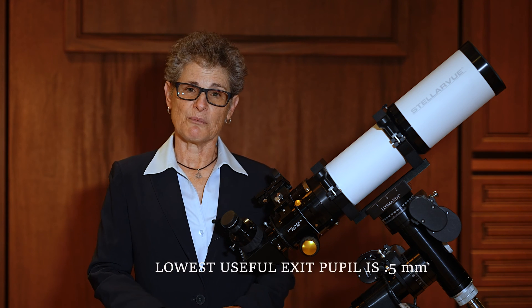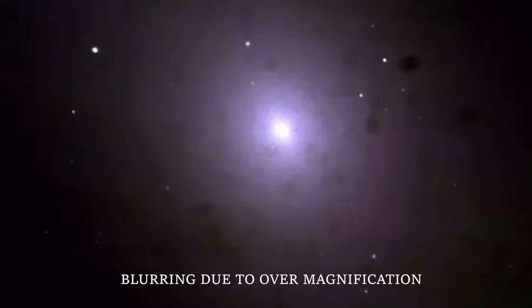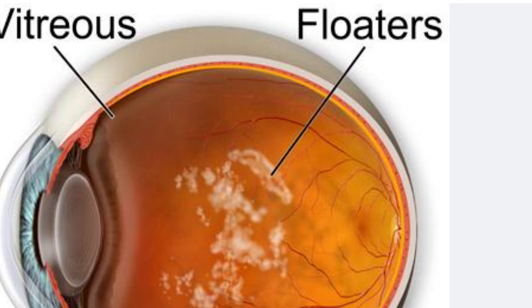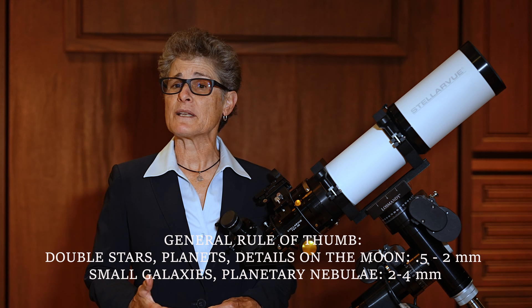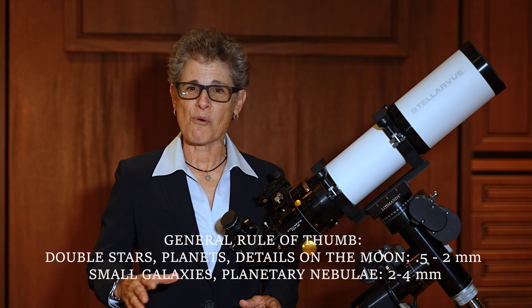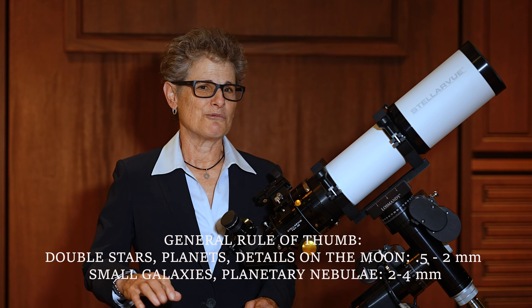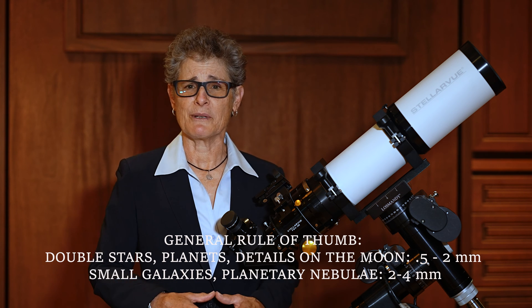The lowest useful exit pupil is 0.5mm. Lower than that causes blurring from diffraction, and defects in your eye like floaters — as well as dirt and defects in your telescope's optics — become very apparent. As a general rule of thumb, use an exit pupil of 0.5 to 2mm for double stars, the planets, and small lunar details. If seeing is poor, increase the exit pupil to 2mm or even 4mm. For small galaxies or planetary nebulae, 2 to 4mm. For faint deep sky objects, experiment with various exit pupils and magnifications to find what works best.